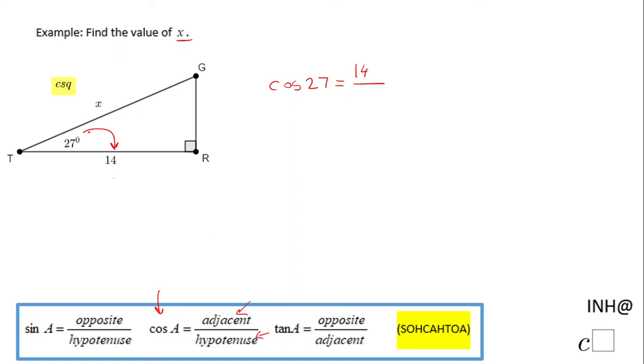The adjacent leg is 14 and the hypotenuse is X, so here we need to solve for X. There are a couple ways to solve for X. Let's multiply by X to get rid of the X as denominator, so we end up with X times cosine of 27 equals 14.